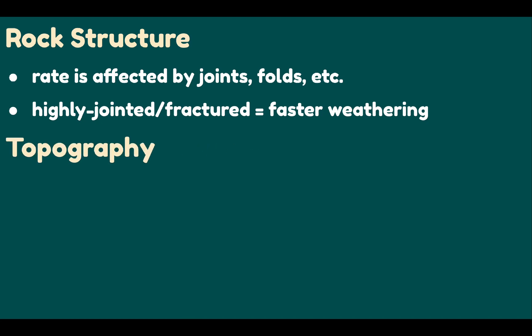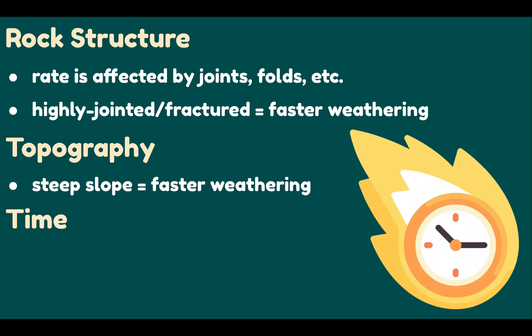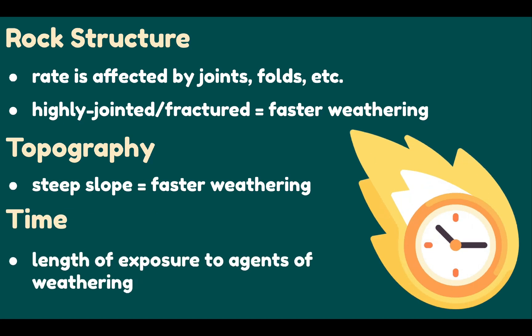We also have topography — the forms and features of land surfaces. Weathering occurs more quickly on a steep slope than on a gentle slope. We also have time: the length of exposure to agents of weathering determines the degree of weathering of a rock.